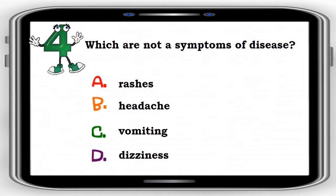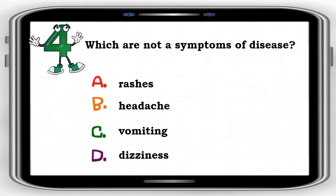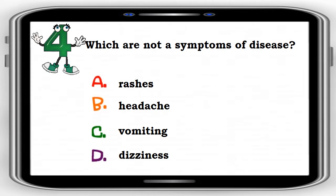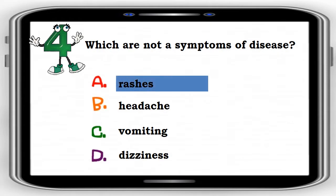Number 4. Which are not the symptoms of disease? A. Rashes, B. Headache, C. Vomiting, D. Dizziness. The correct answer is letter A. Rashes.